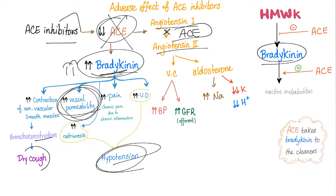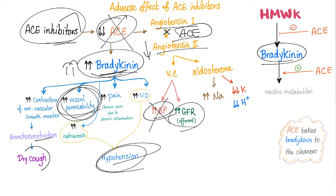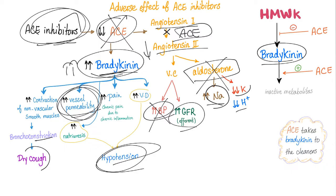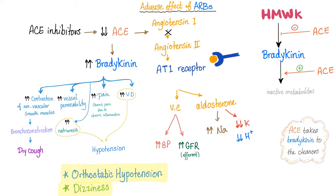When you block the ACE, you have no angiotensin 2 and then you have no hypertension — in fact, you have hypotension. That's why ACE inhibitors are one of the greatest antihypertensive medications. You can have a problem with GFR if you are on ACE inhibitors. Aldosterone is not going to be there, leading to natriuresis, hyperkalemia, and metabolic acidosis.